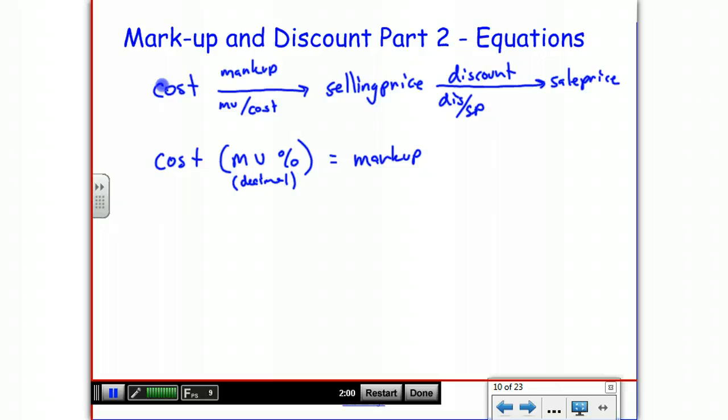The other one with markup deals with what happens if you don't know the actual markup, but you do know the markup percent. Well, we know this: the cost of an item times, and here's where it gets a little confusing, but you're going to multiply by 1 plus the markup percent. Again, markup percent is a decimal in this situation. So in our previous example, 25% would be 0.25.